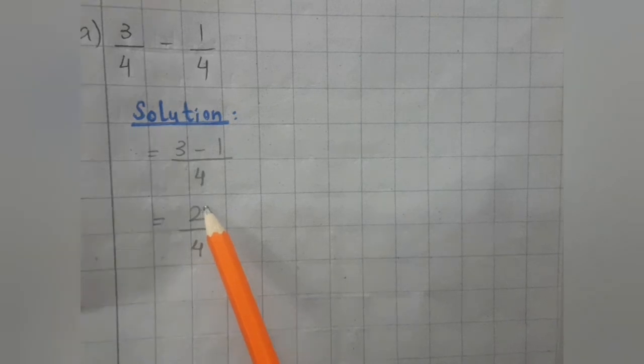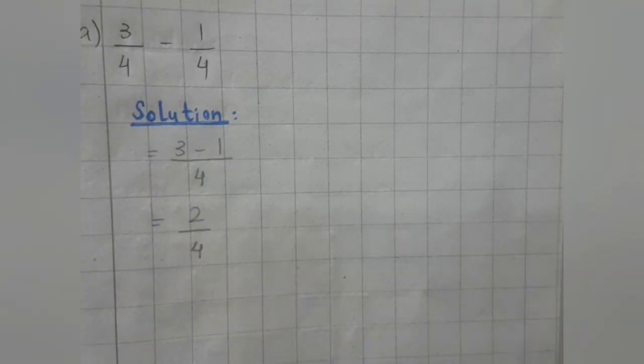3 minus 1 is equal to 2 upon 4. Okay, now tell me can we divide the numerator and denominator with the same number? Yes, we can divide it.